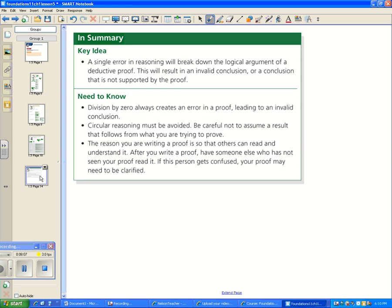Circular reasoning must be avoided, so starting with your conclusion to prove something. Be careful not to assume a result that follows from what you are trying to prove. The reason you are writing a proof is so others can read and understand it. After you write a proof, have someone who has not seen your proof read it. If the person gets confused, your proof may need to be clarified. So in section 1.5, I'd like you to do questions 1, 2, 3, 5, and 7.